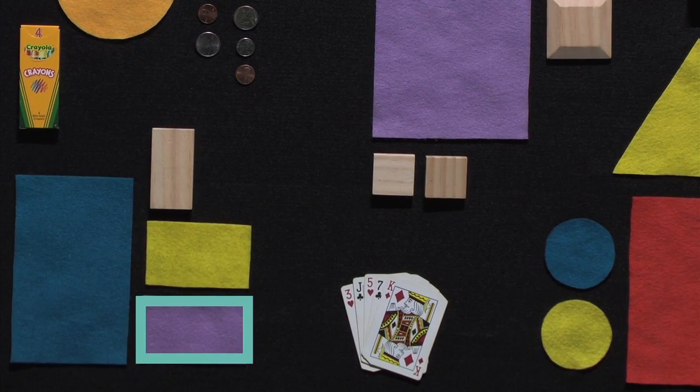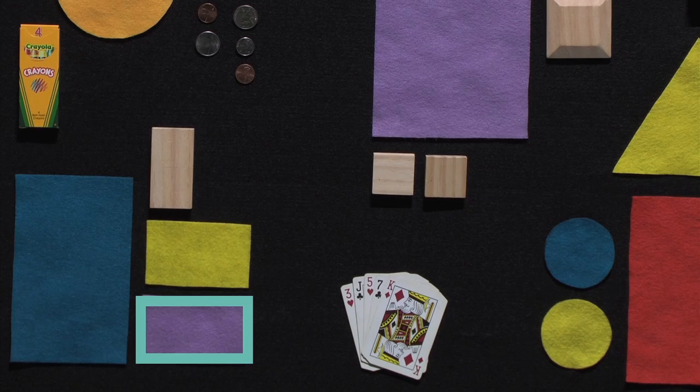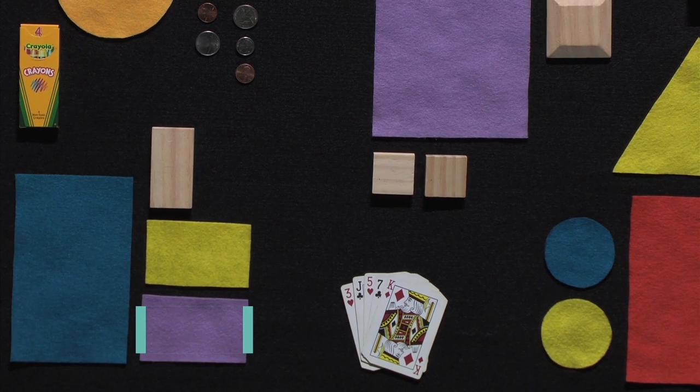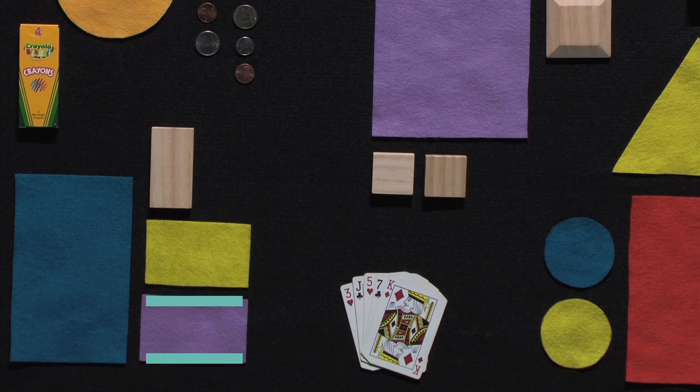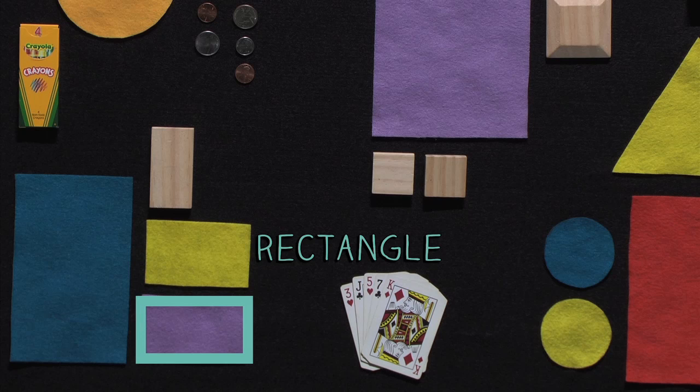This shape has four sides, but they are not all the same length. These two sides are equal, and these two sides are equal. So this is a rectangle.